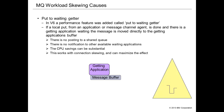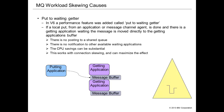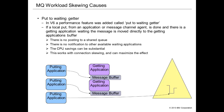Another workload skewing cause is a performance enhancement put into MQ in version 6 called put-to-waiting getter. If an application is putting a message and there is already a getting application waiting on that queue, the queue manager may move the message directly into the application's open buffer without posting notification to the shared queues, without notifying the queue sharing group, and without notifying any other application instance. This saves considerably on path length and CPU. It can also be amplified by connection skewing. Many customers do not want to turn this off because it is controlled at the queue manager level, not on an individual queue.